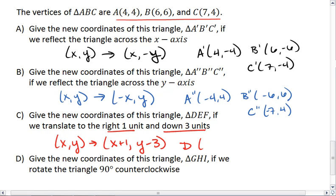D has the ordered pair, let's see, 5, 1. E, which is based off of B, has the ordered pair now 7, 3. And F, which is based off of C, has the ordered pair 8, 1.